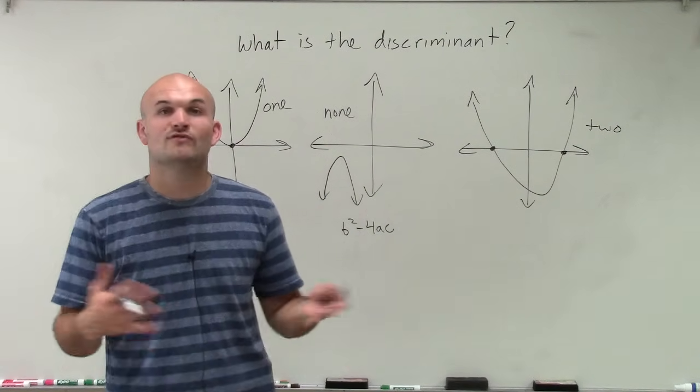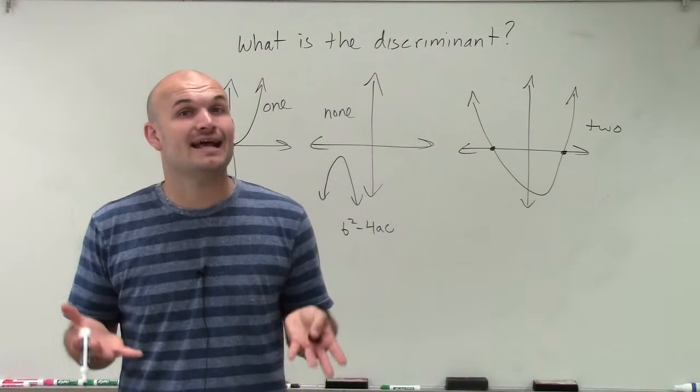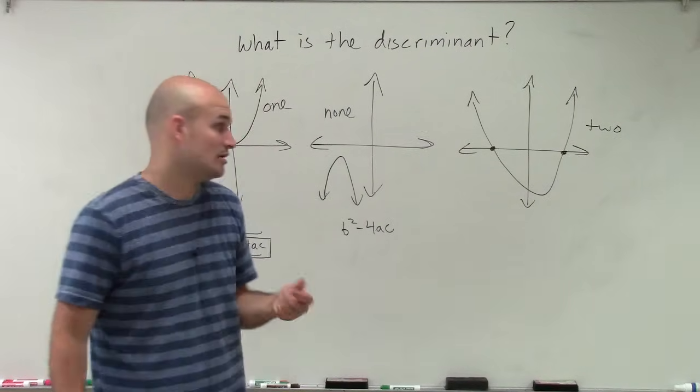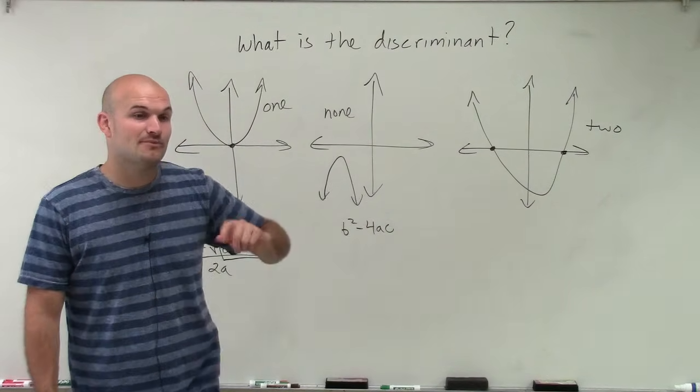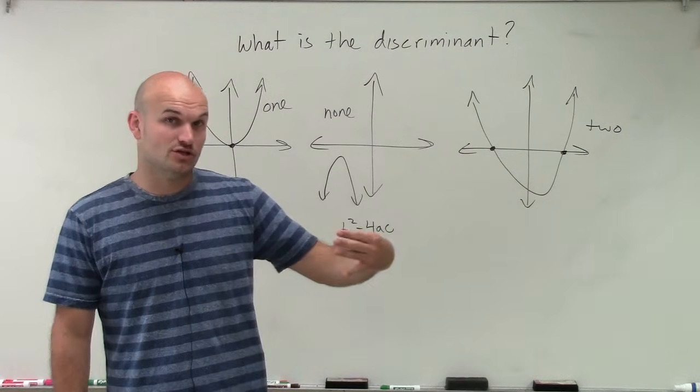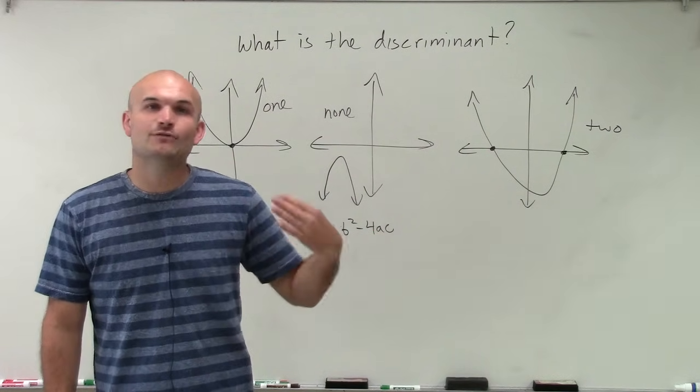However, let's pretend we have the square root of 8. Now, the square root of 8 is not a rational number. That's an irrational number. So if I have the square root of 8, then I'm going to have two real, it's still going to be a real number, but it's going to be irrational roots.